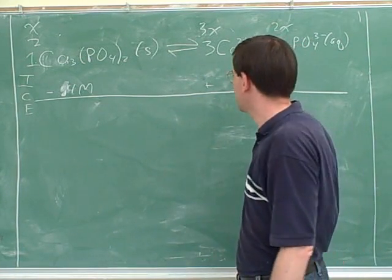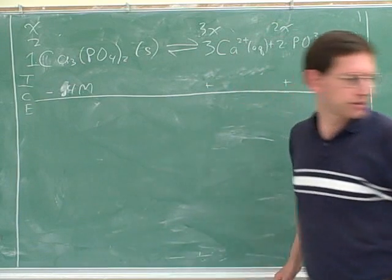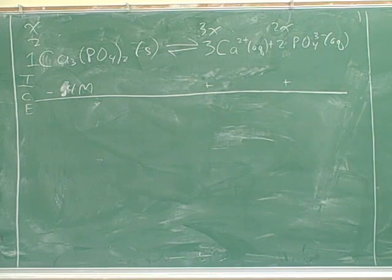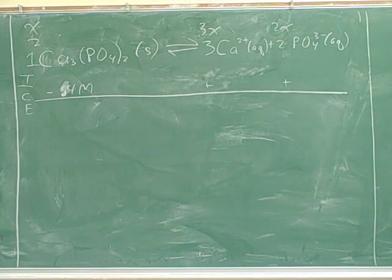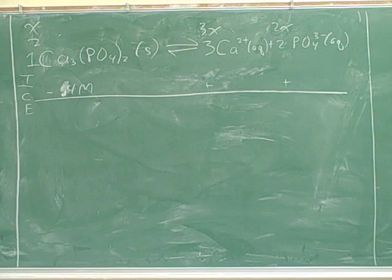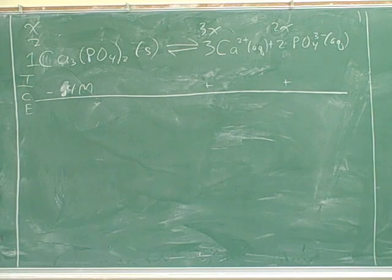So let's go ahead and do those calculations. That's right — so 0.4 times 3 gives us 1.2, and 0.4 times 2 gives us 0.8.